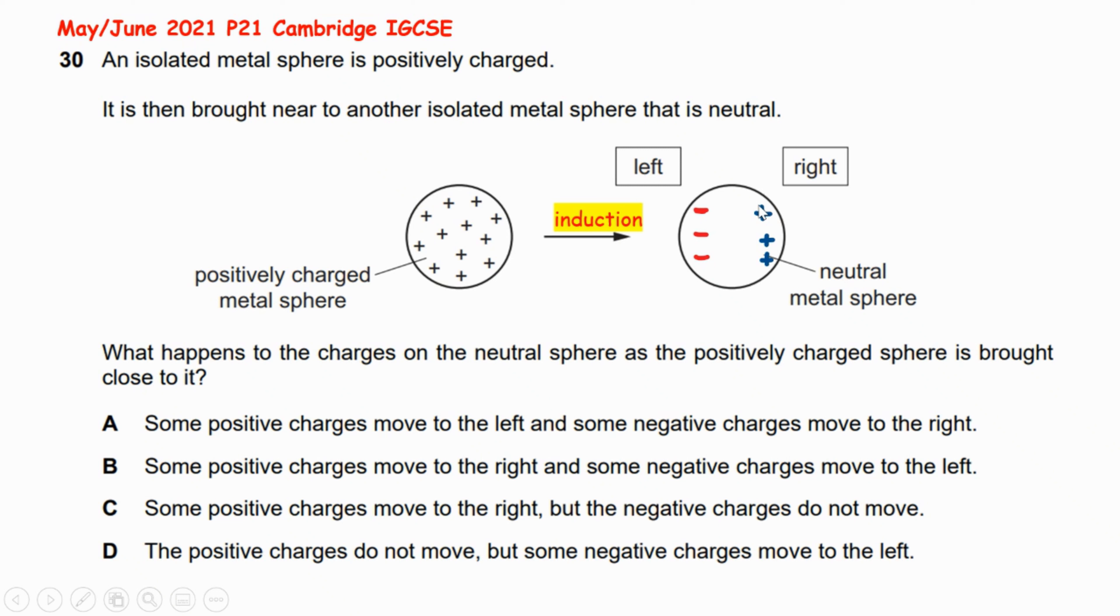mention that positive charges can slightly move, but the best answer for this question is D. The positive charges do not move because they represent the core and are captured inside the nucleus. The electrons can accelerate to the left side, easily leaving the positive charges aligned at the right side. So the correct answer is D: the positive charges do not move, but some negative charges move to the left.